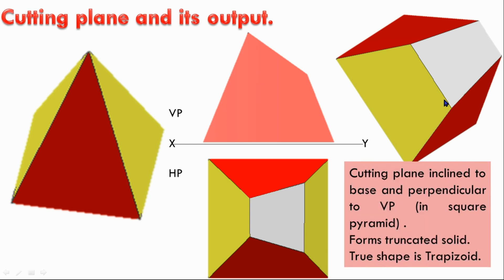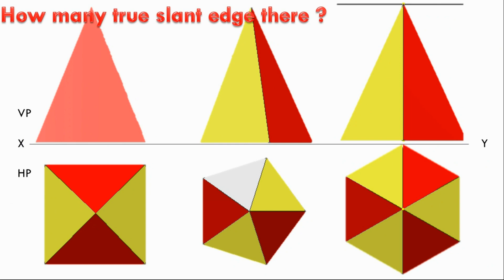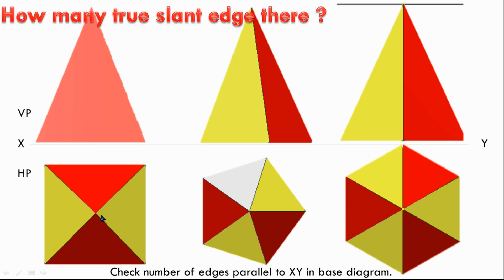Now let's look at the development. Where is the true slant edge? On the left side — where is the true slant edge? The slant edge is in the top view. If the XY is parallel, the front view is true. The first square prism has base perpendicular to the VP. That is the condition of VP. The right side slant edge is true — it is XY parallel. The second square prime is 1. At the last square prime, the other slant edge is not XY parallel, so that square prime is 0.